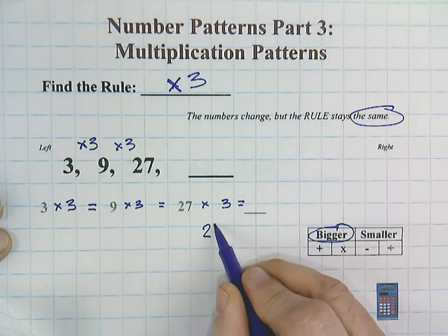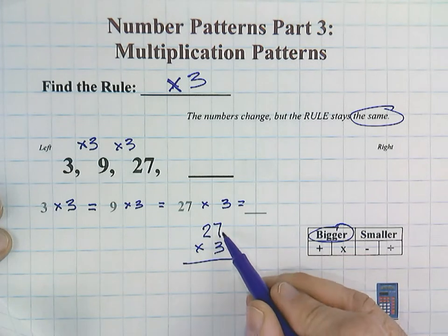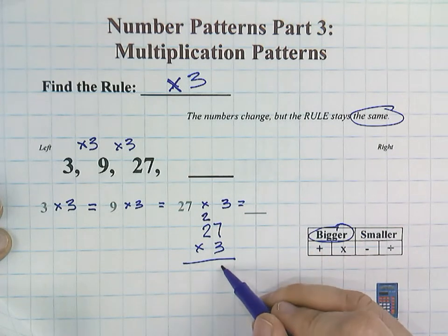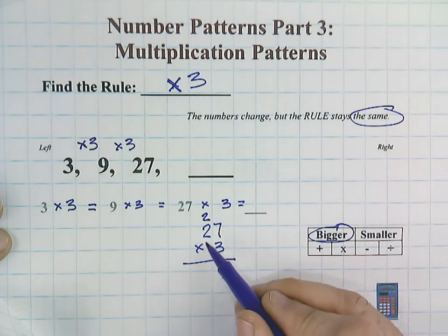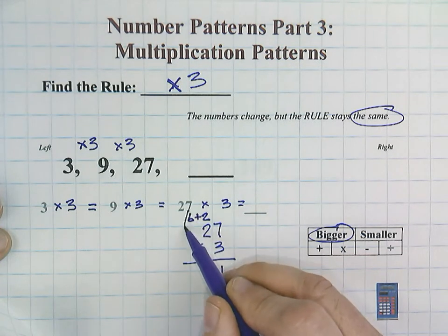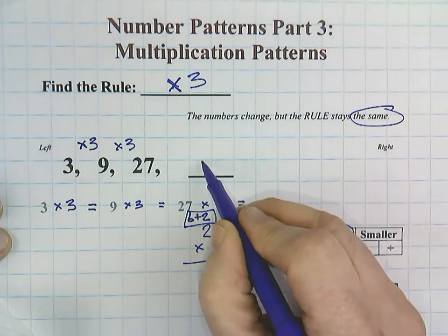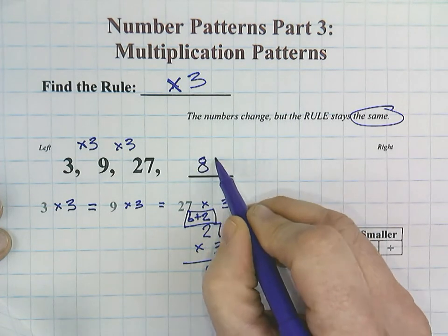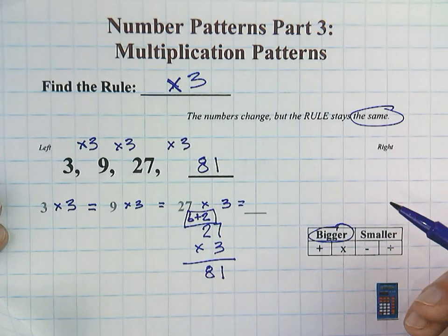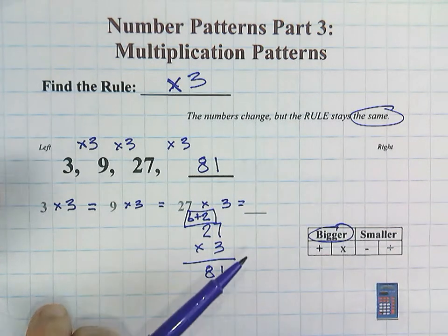Well, so 27, I'm going to show that down here. 7 times 3 would be 21. I'm going to regroup my 2. 3 times 2 is 6, which I'm going to add. 6 plus 2 would be 8. So our last number in this pattern would be 81 using a multiplication rule, a times 3 rule.